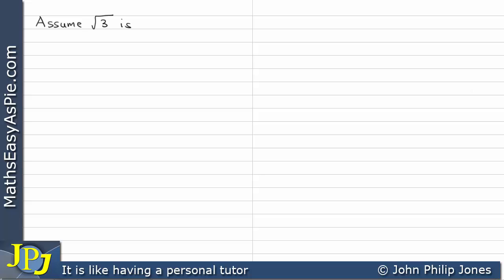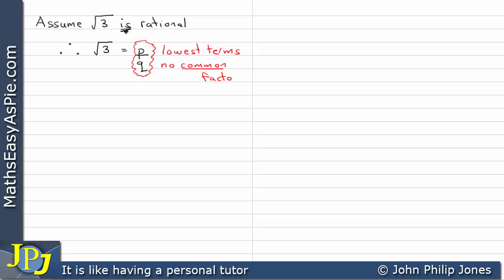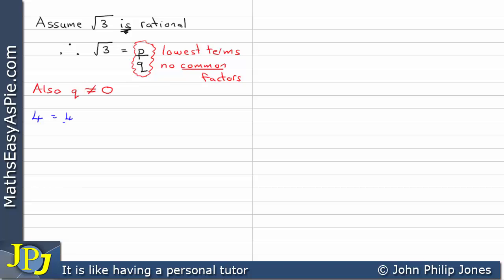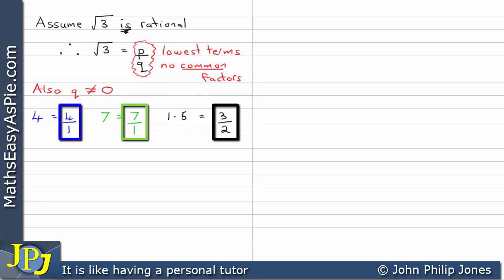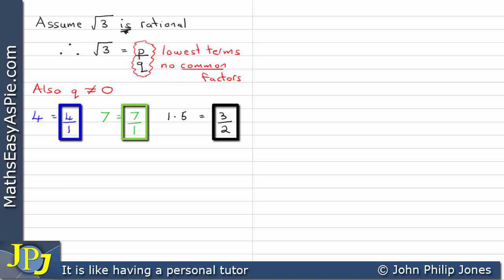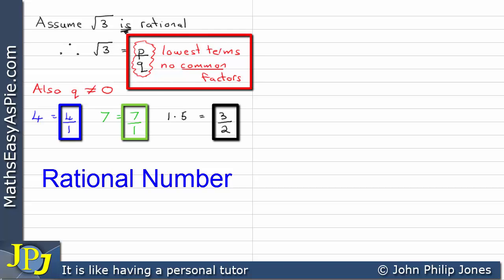For the proof, we assume the square root of 3 is rational. Therefore we can write √3 = p/q, which is a ratio in its lowest terms where p and q have no common factors, and we also assume that q does not equal 0 — if q were 0, the ratio would not be defined. Just to remind you what a rational number is: 4 is 4/1, 7 can be expressed as 7/1, and 1.5 can be 3/2. A rational number is one that can be expressed as a ratio in its lowest terms with no common factors.